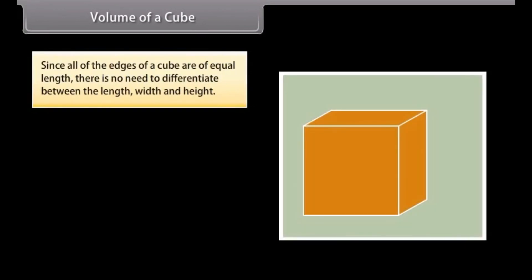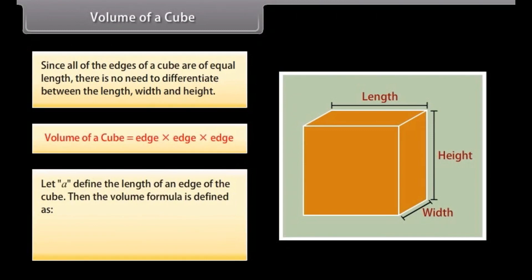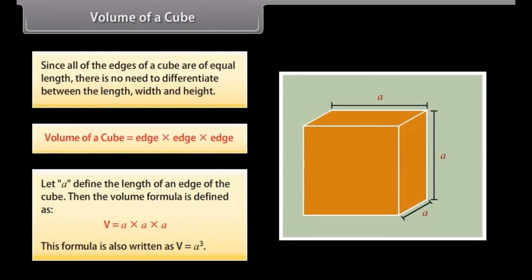Since all of the edges of a cube are of equal length, there is no need to differentiate between the length, width, and height. The volume of a cube is determined by multiplying the length of three edges. Let A define the length of an edge. Then the volume formula is V = A × A × A, also written as V = A³.